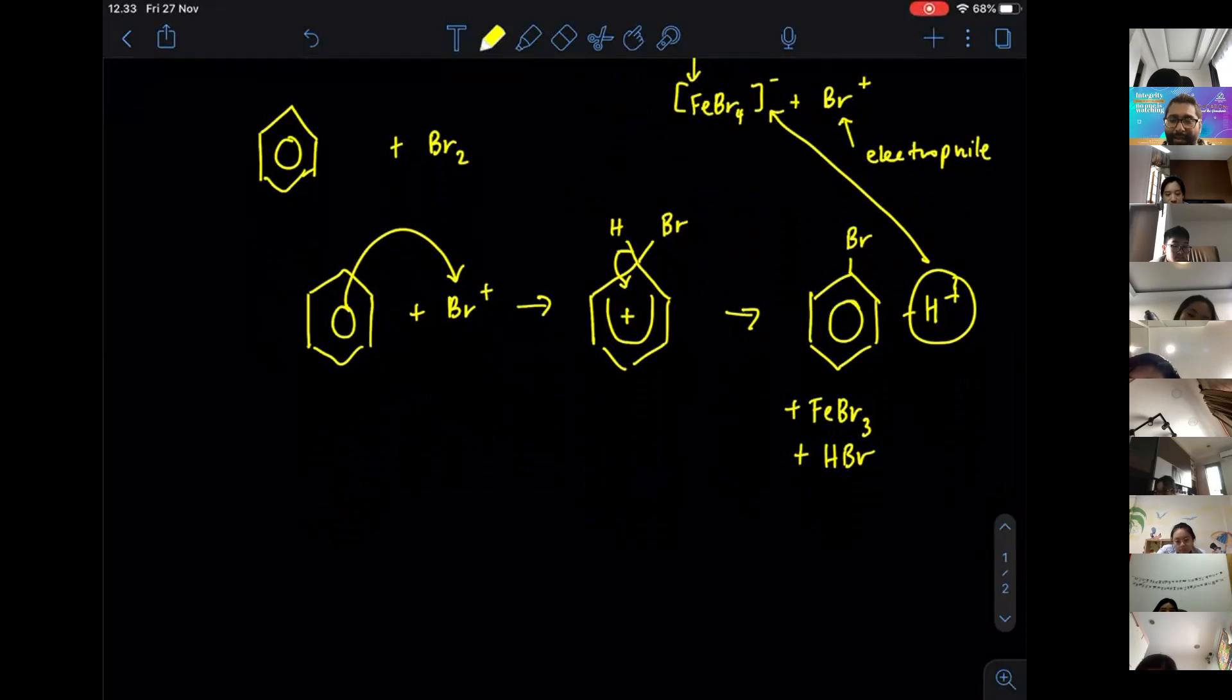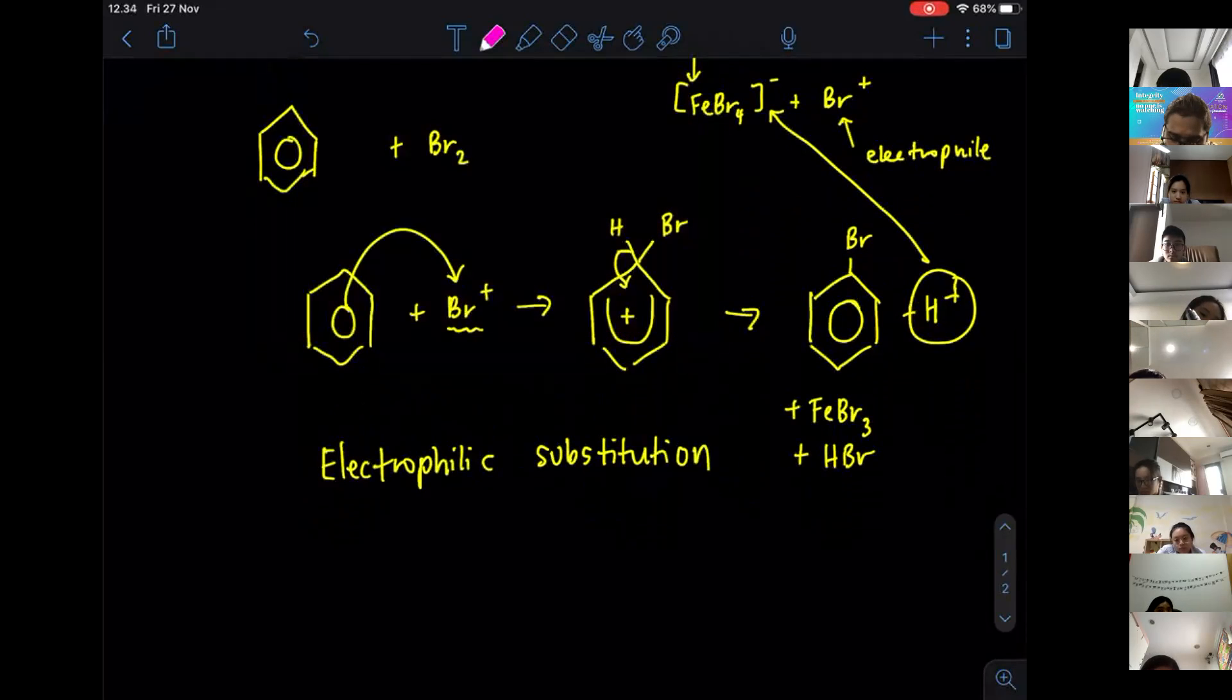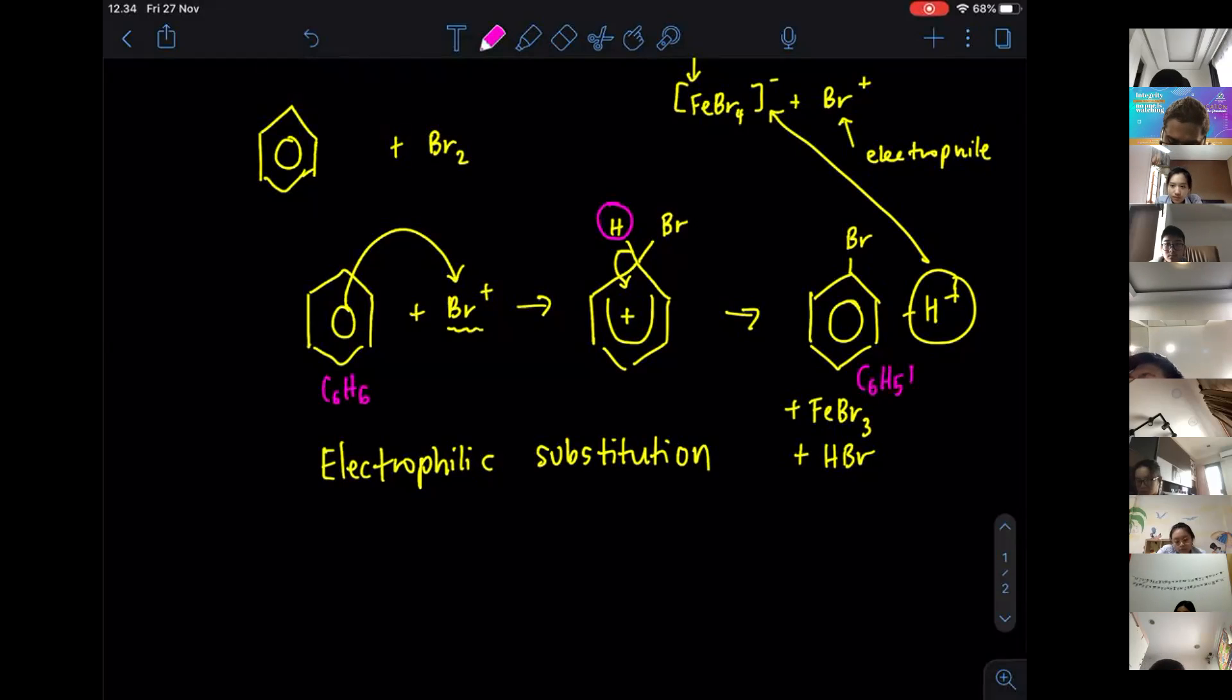So this entire thing is known as electrophilic, because we are dealing with electrophile, something that loves electrons, and substitution. Why we call this a substitution? Because you are trying to substitute this hydrogen from the benzene to become Br. So it means from C6H6, you are going to get C6H5Br. You have managed to substitute the hydrogen with Br. So therefore, it's called electrophilic substitution.